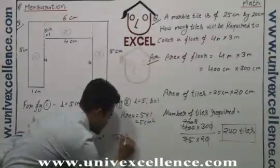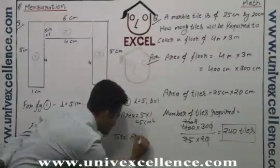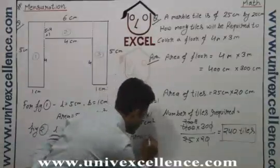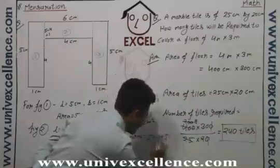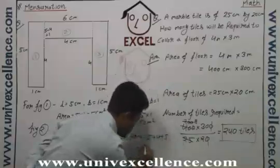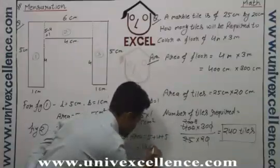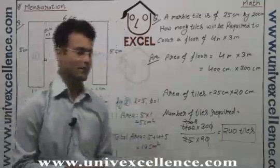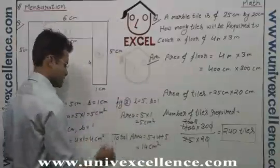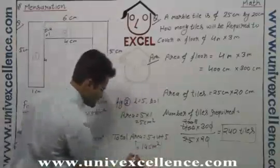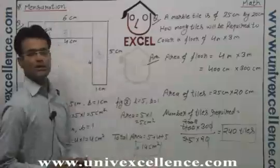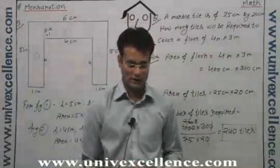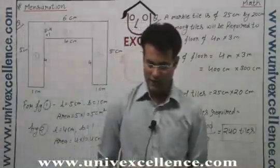So the total area of this whole figure will be 5 + 4 + 5 = 14 centimeter square. This is the complete area of this figure. Just break down your figure into these small figures and you can find the area.